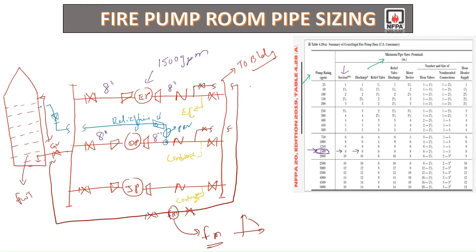For the jockey pump it will be different, since the capacity of the jockey pump is very less. The size of the jockey pump will depend upon the flow requirement, which may be 25 GPM or 50 GPM — it depends. You need to refer to NFPA 20 to select the jockey pump capacity. The discharge header will also be 8 inch based on this table, and the test line as well.